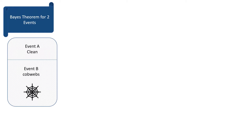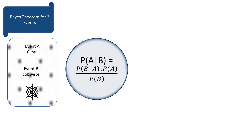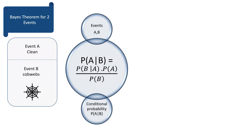Consider a scenario where you find cobwebs in the house and you want to decide whether to clean the house or not. What is the probability that you will clean the house given that there are cobwebs? For this, we use the Bayes theorem for two events: the presence of cobwebs and the cleaning. Probability of A given B equals probability of B given A times probability of A divided by probability of B. This is the Bayes theorem, where A and B are events, and probability of A given B is called the conditional probability.